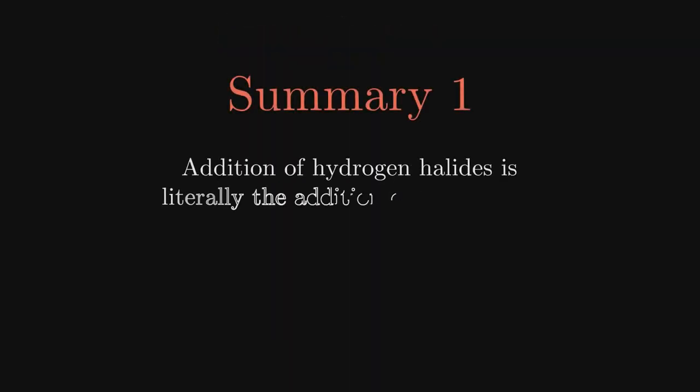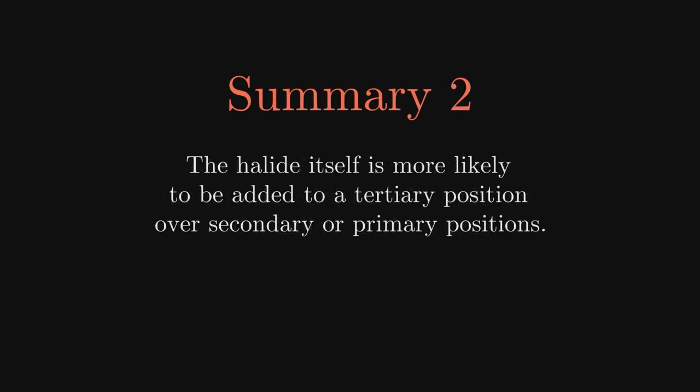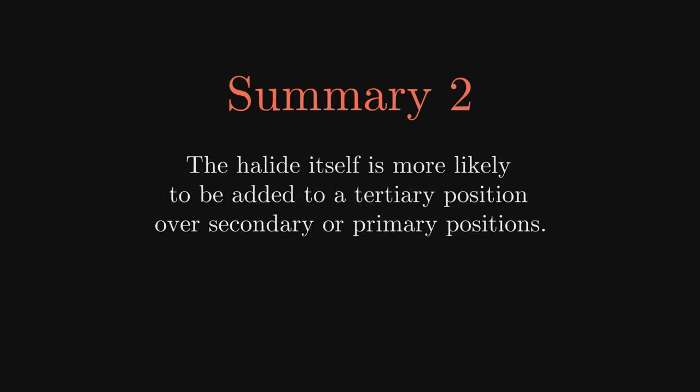In summary, the addition of hydrogen halides on alkenes is just that, the addition of one hydrogen and one halide to the carbons of the double bond. When possible, the halide favors addition to a tertiary position over a secondary or primary position.